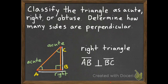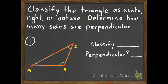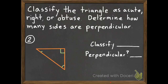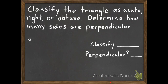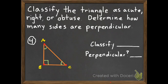You're now ready for the four problems to bring to class tomorrow. Problem one: classify the triangle and write if there are any perpendicular lines. Number two: classify the triangle and determine if there are any perpendicular lines. Number three: classify the triangle as acute, right, or obtuse, and determine how many sides are perpendicular. And last, classify the triangle and determine if there are any perpendicular sides. Bring these to class tomorrow and enjoy the rest of your day!